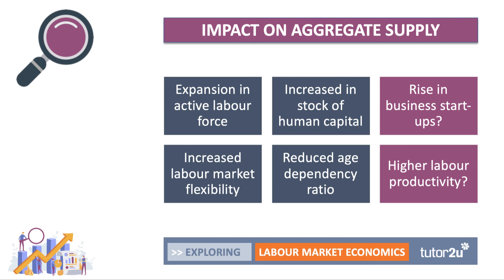Work and study are the most common reasons for moving to the UK, accounting for about 70–75% of long-term immigration. Many people come to work in shortage occupations, including in health care and social care. On the aggregate supply side, migration can also help reduce the age dependency ratio, which is clearly a long-term threat to growth and public finances.